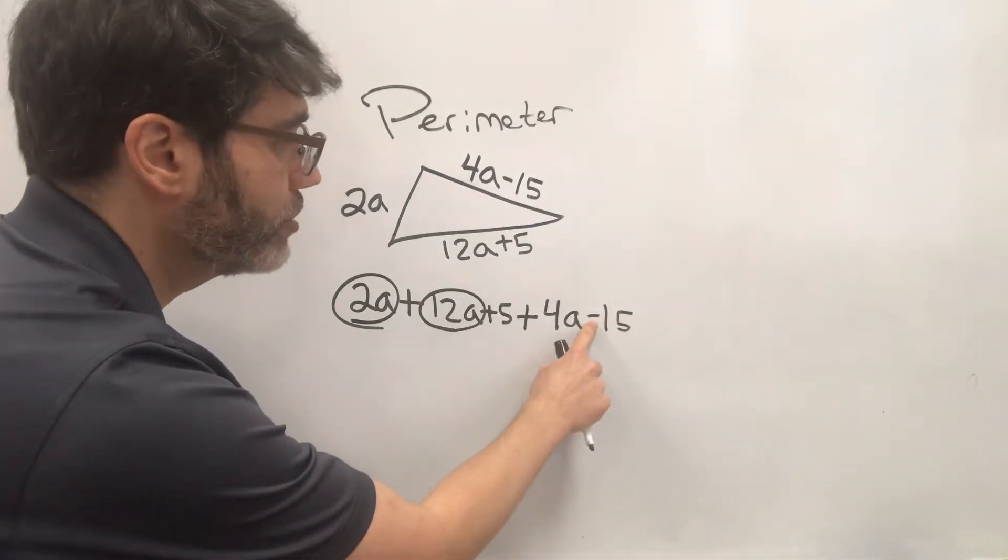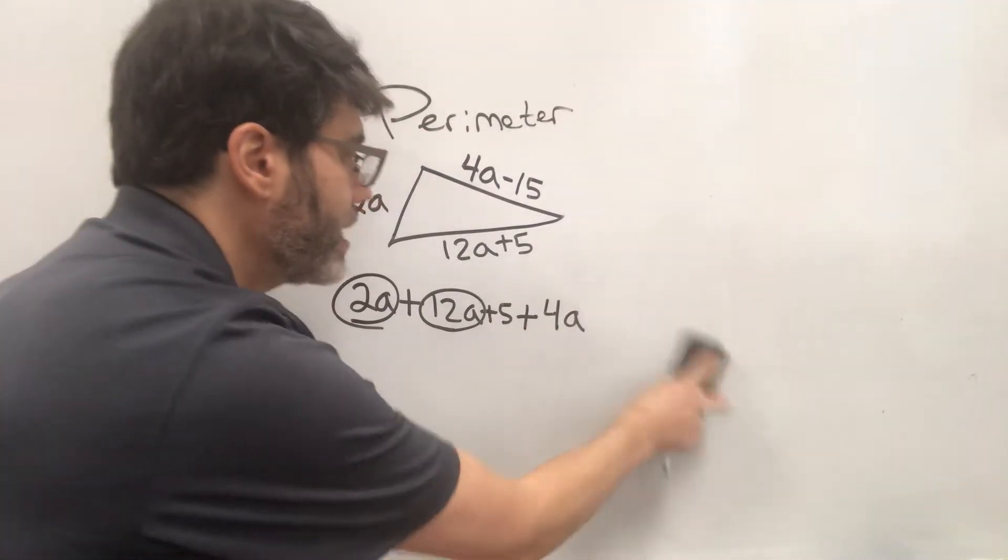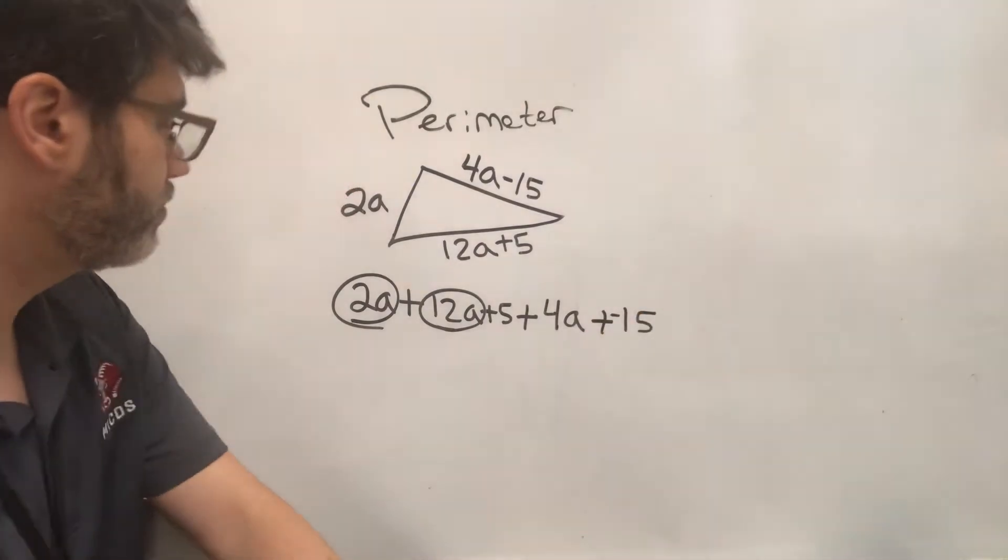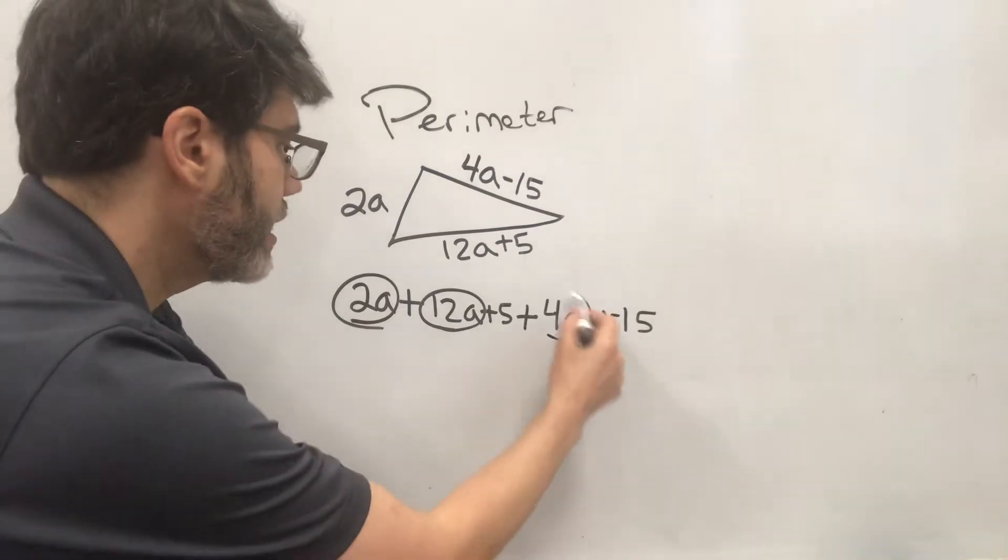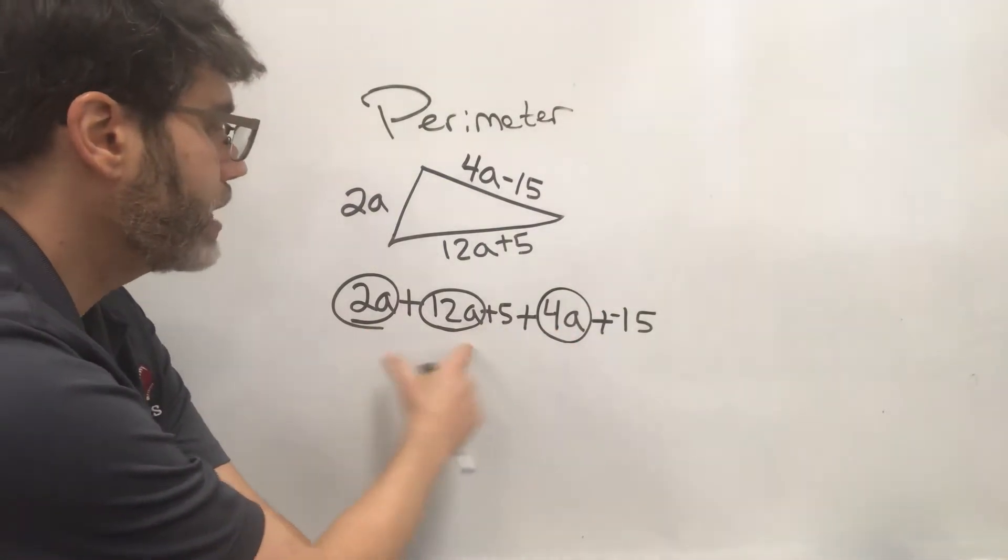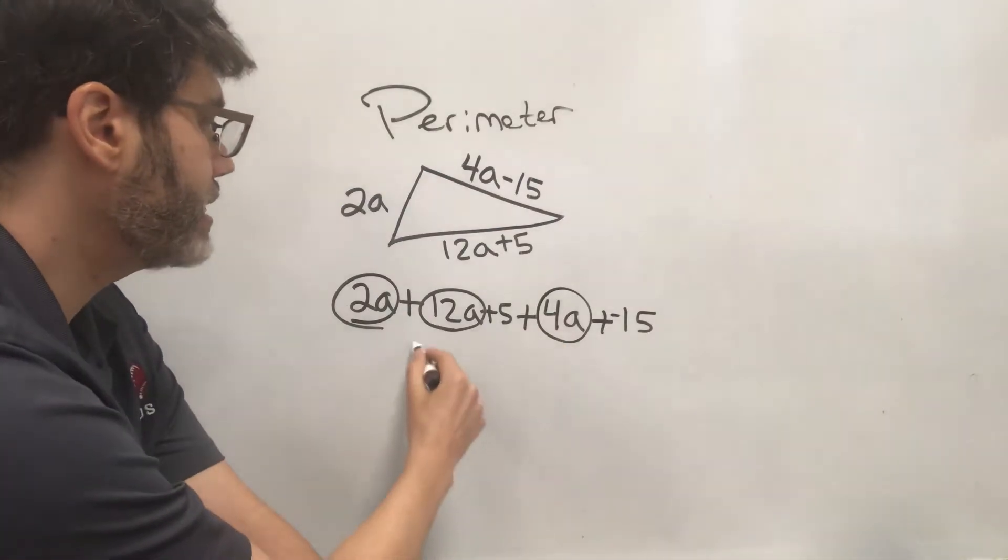It doesn't matter how you do that as long as they all get done in the end. So a is a good place to start. So we'll circle all of our a terms. Oh, and by the way, if you want to take the subtraction sign and make it into a plus negative, so this subtraction sign may get into a plus negative, that might help us out. We have another a over here. So 2a and 12a, that's 14a. 14a plus 4a is 18a.